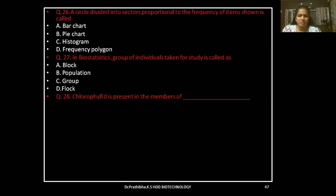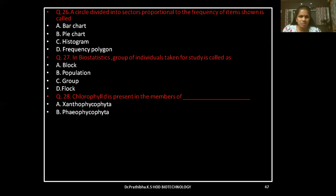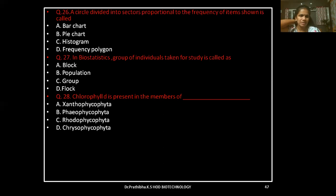Question 28: Chlorophyll D is present in the members of — Xanthophycophyta, Phaeophycophyta, Rhodophycophyta, or Chrysophycophyta.